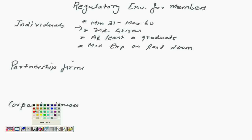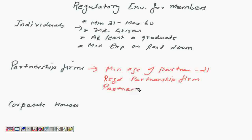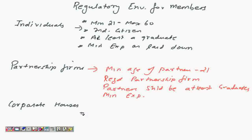Similarly, if you are a partnership firm, the minimum age of partners is 21 — maximum age has not been laid down. It should be a registered partnership firm, partners should be at least graduates, and again minimum experience as laid down, which also includes clearing of the NISM exam in our case if you want to become a member for the currency futures segment.